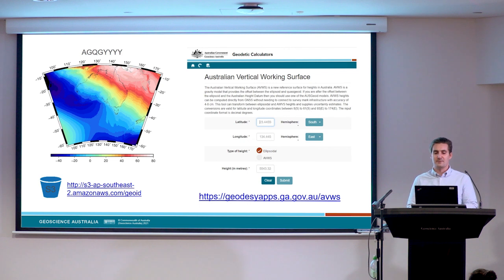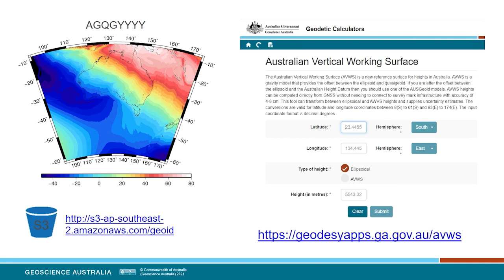Over time, we'll be continuing to upgrade and improve the geoid model as new data become available so that users can determine better and better AVWS heights. The Australian Vertical Working Surface is available for use right now, currently underpinned by the AGQG 2017 model. The AGQG model and its error map are available for download through our geoid model Amazon Web Services S3 bucket. GA's Flying Hellfish team have put together a web app to allow anyone to convert GPS ellipsoidal heights to AVWS heights, and this can be used in conjunction with other tools like the AusGeoid 2020 tool to convert AHD heights to AVWS heights too.